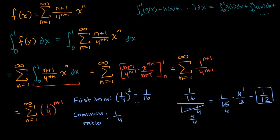And we're done. This seemed really daunting at first, but we just have to realize: an integral of a sum — even an infinite sum — is the sum of those infinite integrals. We take the antiderivative of these infinite integrals, which we were able to do. Then we recognize we just have an infinite geometric series, which we know how to find the sum of. And we're done.